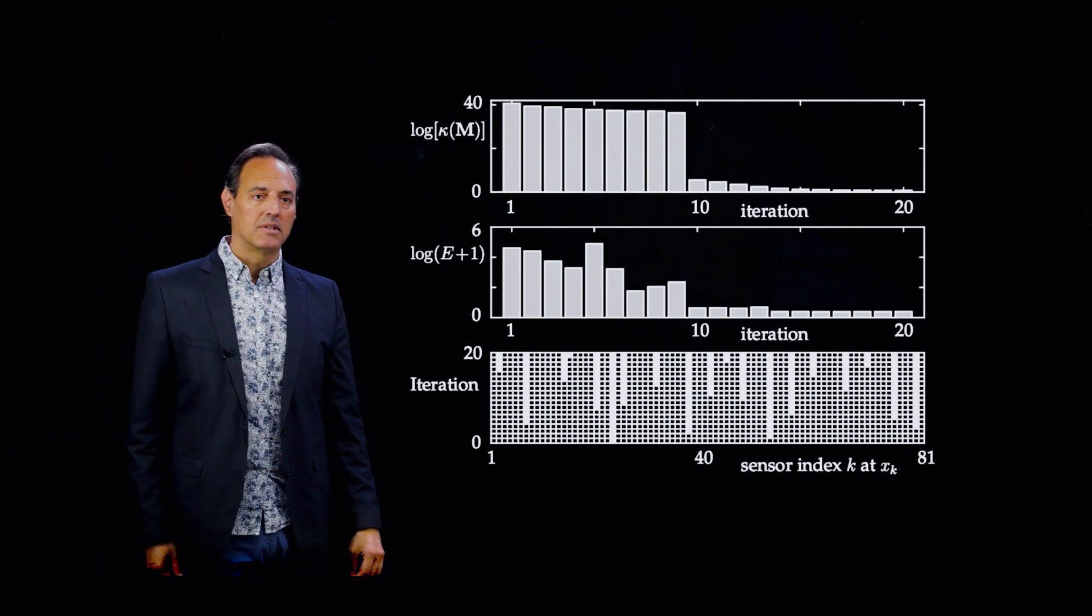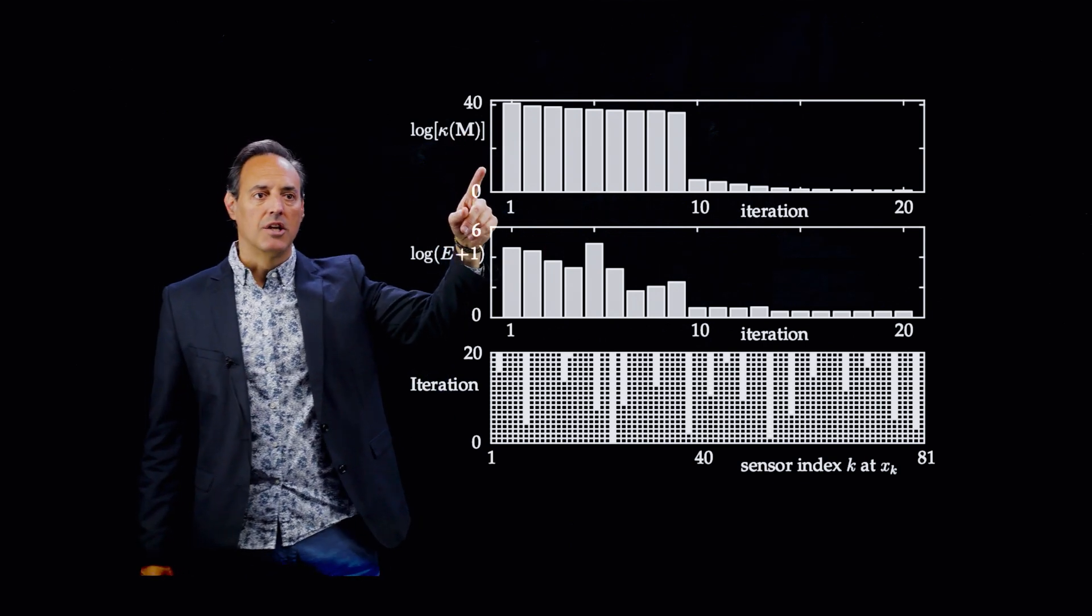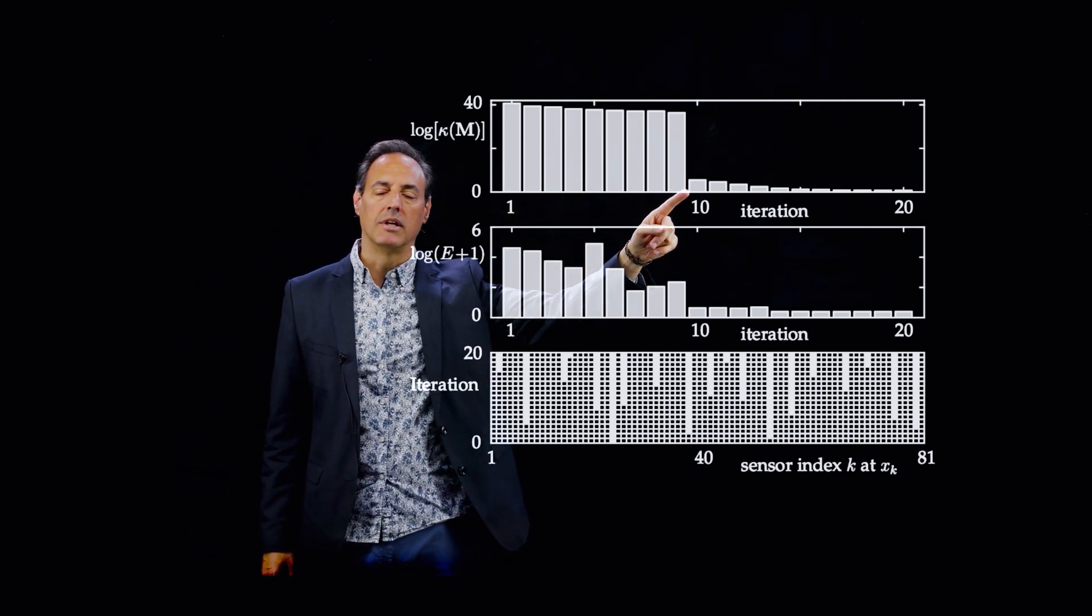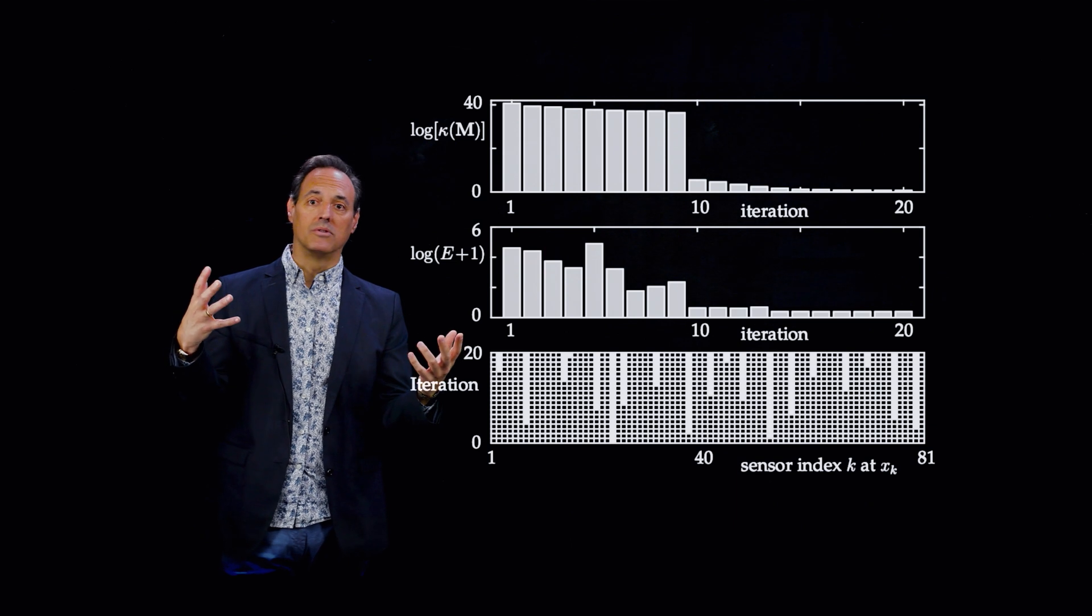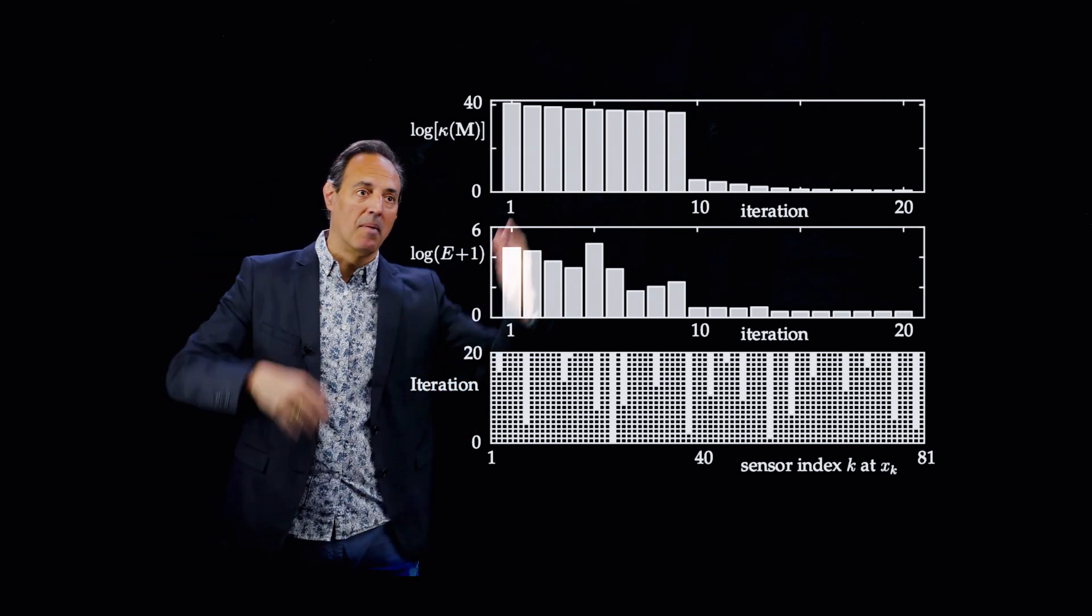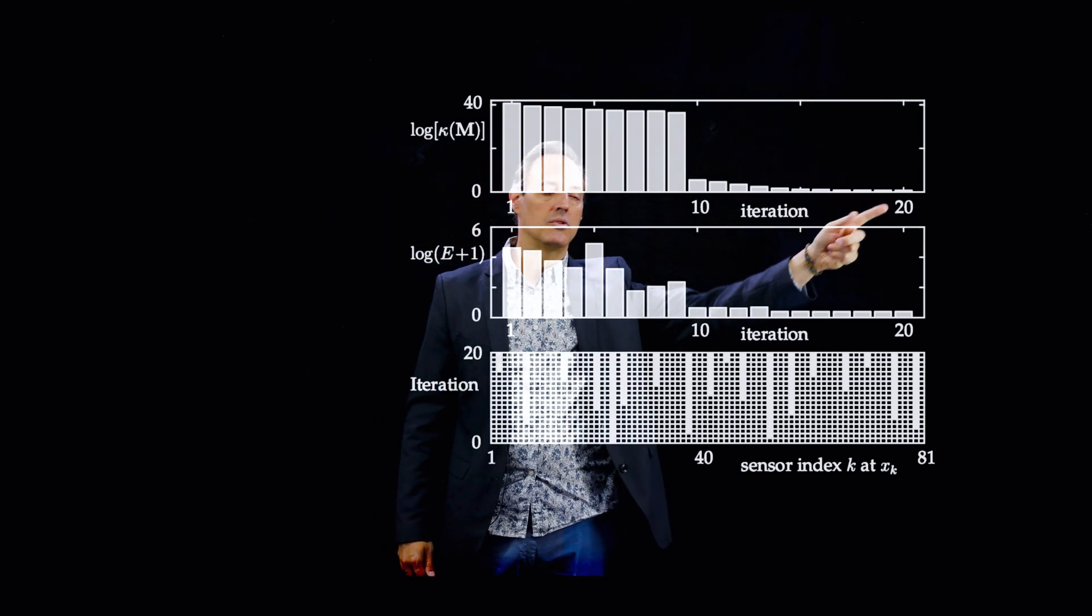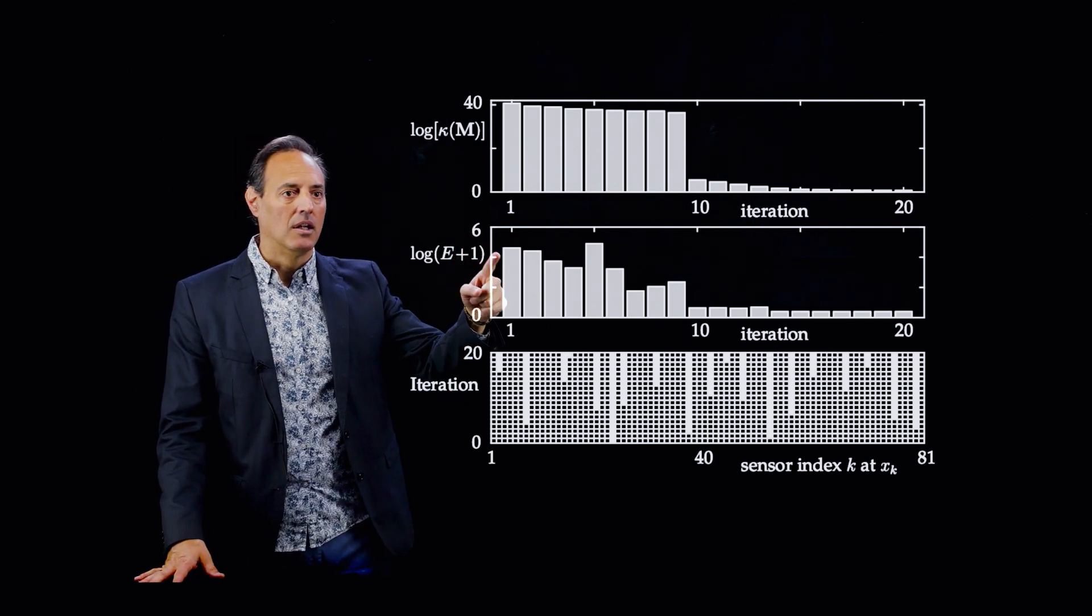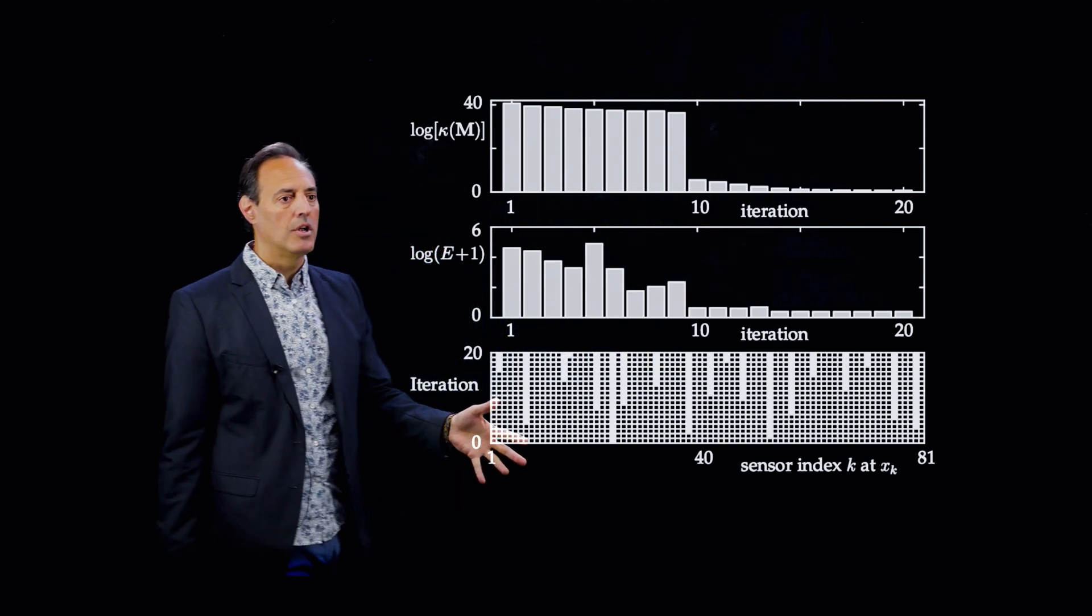Here's what happens as I start going through this process and picking sensors. Here's the log of the condition number. The first sensor, it's still pretty big condition number. As I go through, all of a sudden it falls off a cliff at 10 iterations, which makes sense because I have 10 POD modes. As soon as the number of sensors matches my number of modes, my error drops precipitously right here. Then I start to iterate and improve. Here's what the error does if I look at the log of the error—right here there's a drop. What I'm showing you here at the bottom...